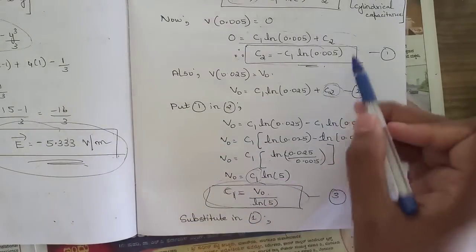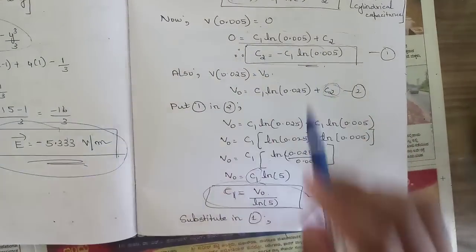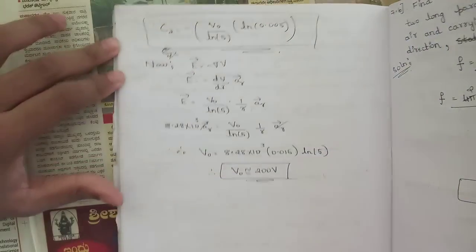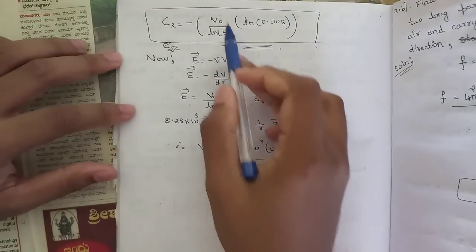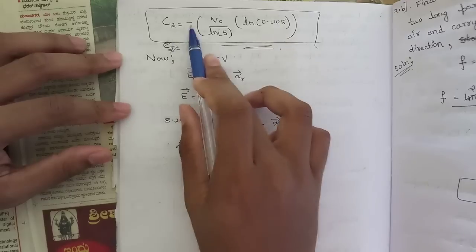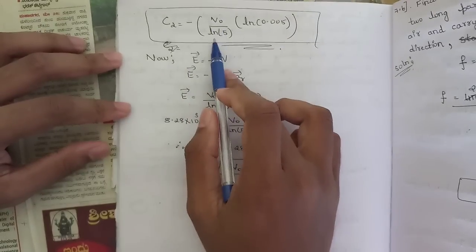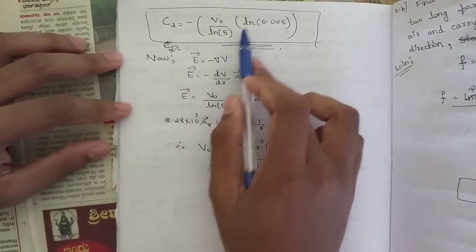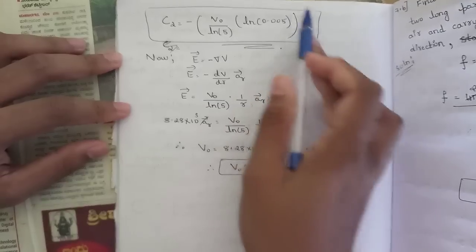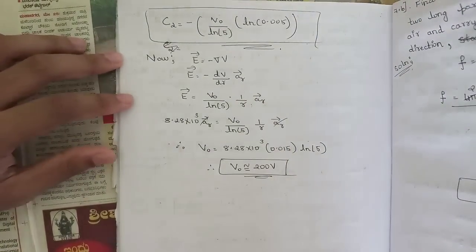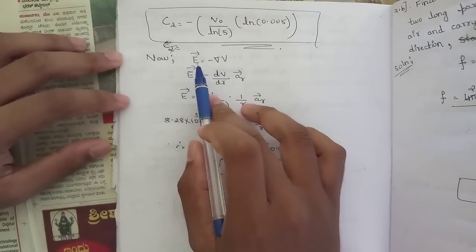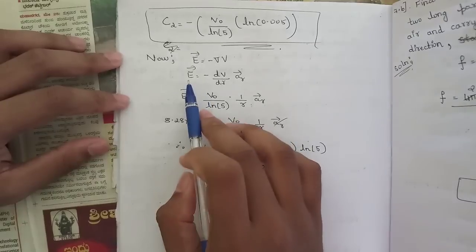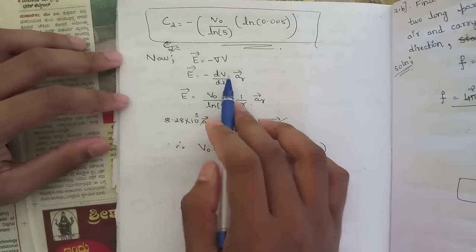Substituting C₁ back into Equation 1: C₂ = -(V₀ / ln 5) × ln(0.005). Now to find V₀, use the relation E = -∇V, that is E = -(dV/dr) aᵣ.